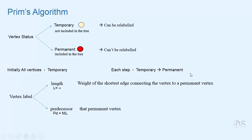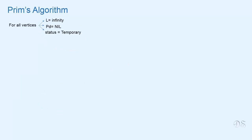For making a vertex permanent in each step, the greedy approach is used — the vertex with minimum length is made permanent. Initially, for all the vertices, length is equal to infinity, predecessor is nil, and status is temporary. We will select any vertex of the graph as the root vertex and make its length equal to 0.